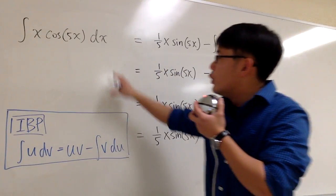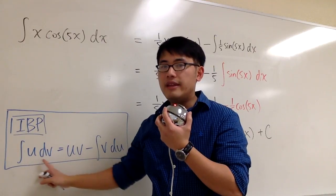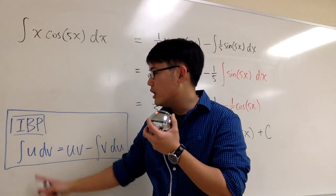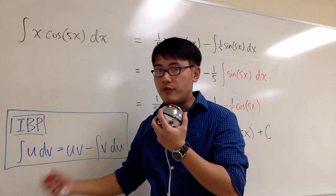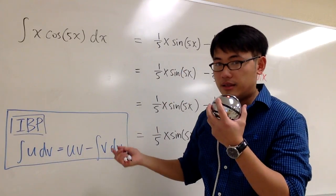And what this is saying is that we have to look at the original integral and pick something for u and then the other for dv. The u that you choose, you are going to differentiate that. The dv that you choose, you are going to integrate that. Let's get to work.